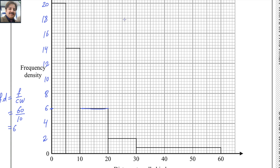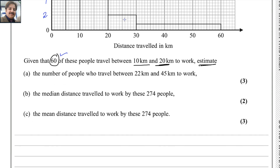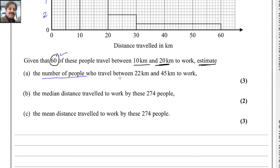Now go back to the question. We want to find the number of people who travel between 22 kilometers and 45 kilometers. From 20 to 30 there are 10 small squares, so 22 will be here — this is 22. You need to find from 22 to 45.